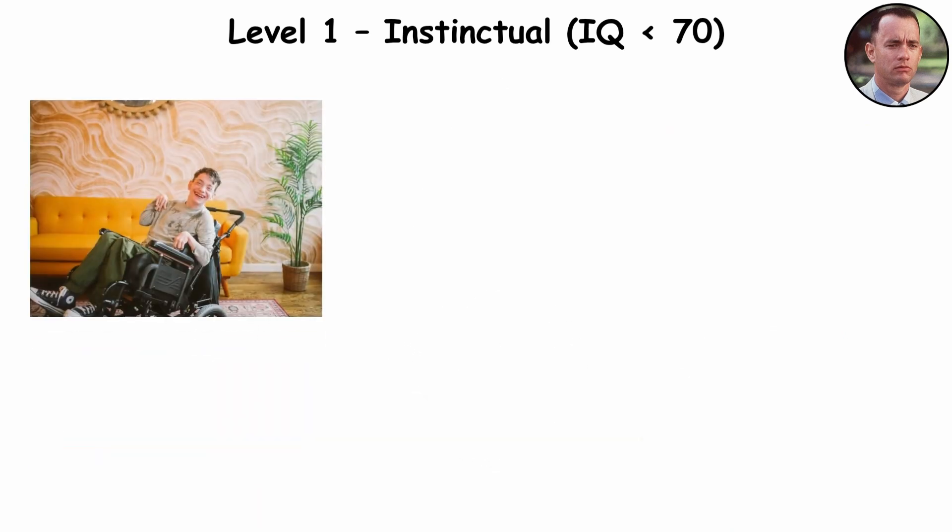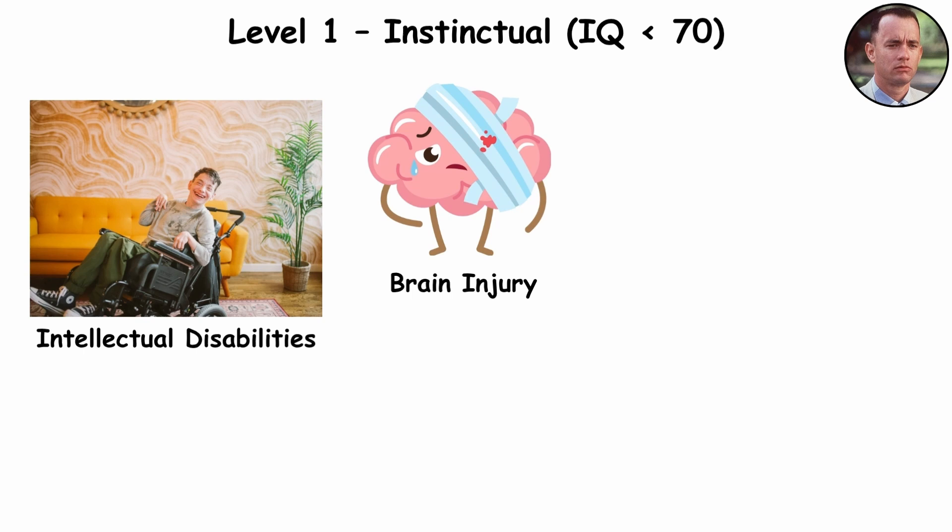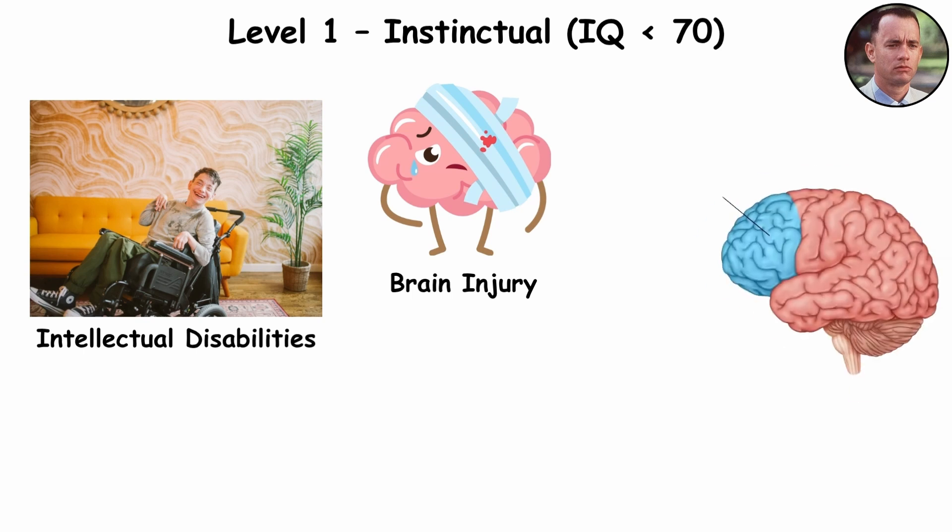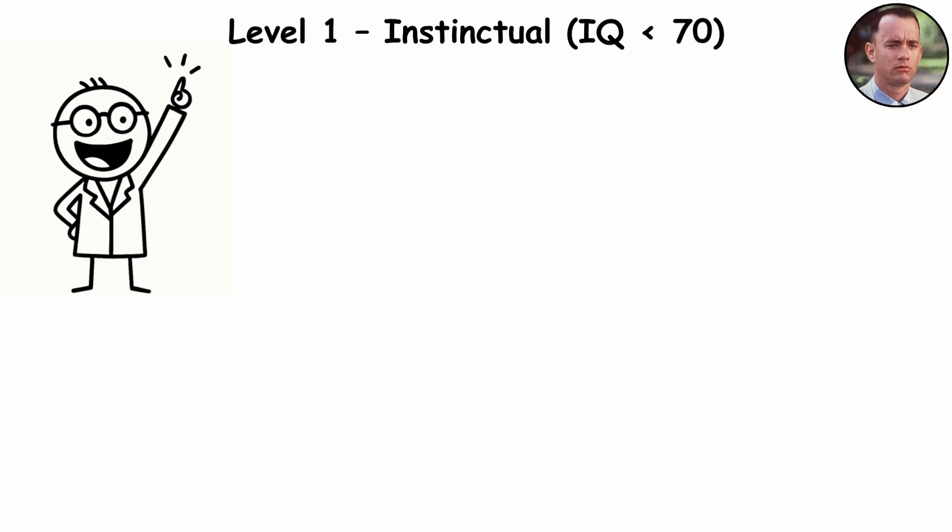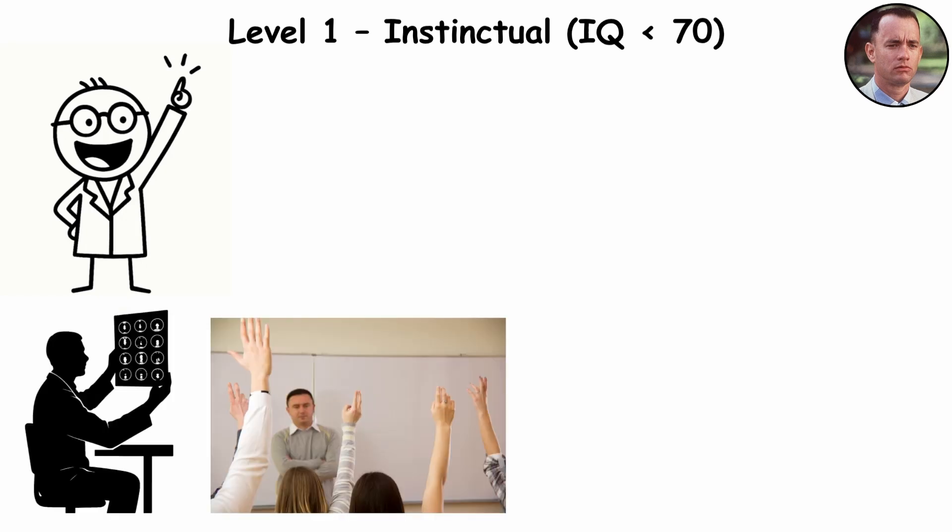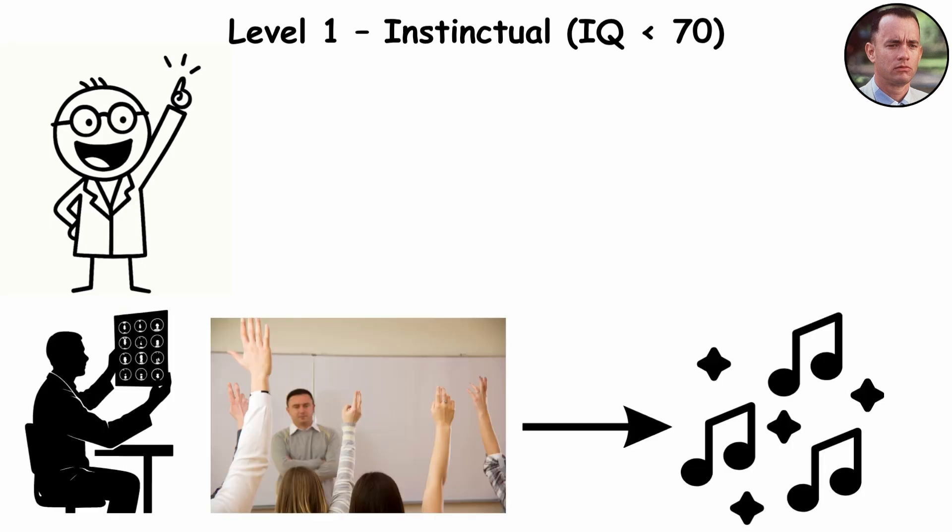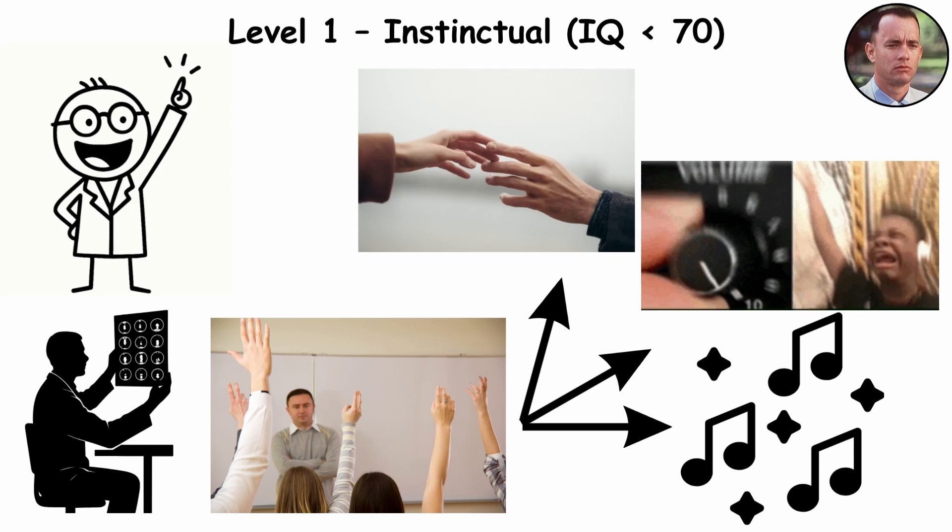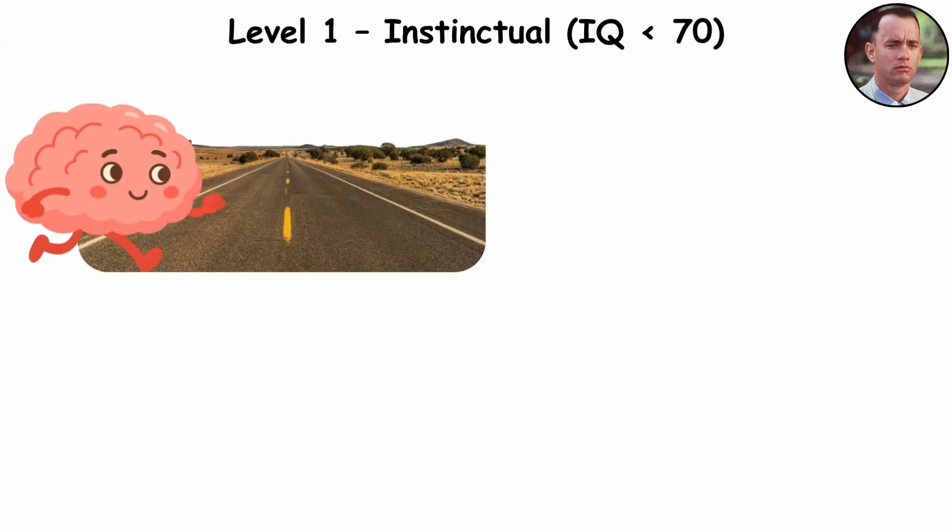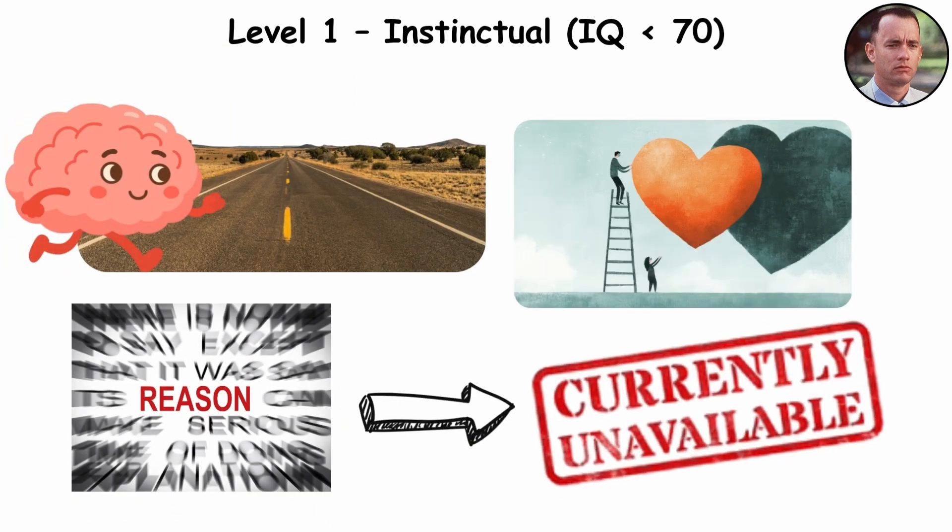This level often appears in people with profound intellectual disabilities or early brain injury. Situations where higher thinking regions, like the prefrontal cortex, don't fully develop. But here's something fascinating. Brain scans show these individuals still respond powerfully to rhythm, music, and human touch, as if the brain finds new routes to feel connection when reason isn't available.